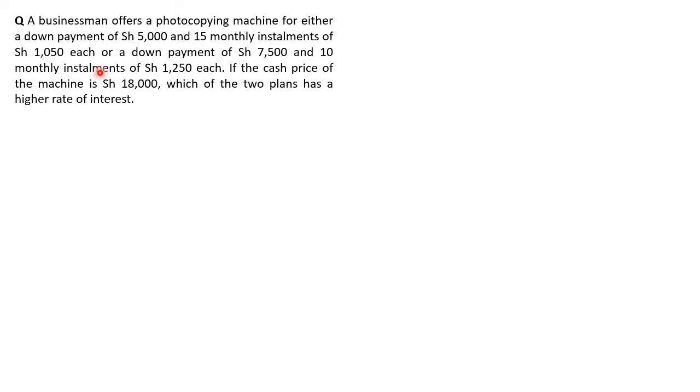We're told that a businessman offers a photocopying machine for either a down payment of $5,000 and 15 monthly installments of $1,050 each, or another plan of a down payment of $7,500 and 10 monthly installments of $1,250 each. The cash price of the machine is $18,000. So which of the two plans has a higher rate of interest?